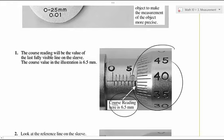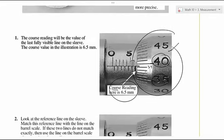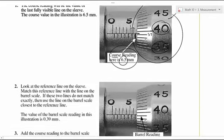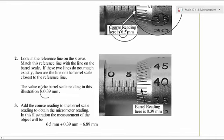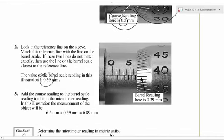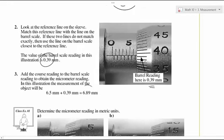But that's not it. We also have this barrel that we're rolling. And we use this part here to help us measure as well. And so we can see that we've got a 35 here and a 40 here. So that's 40, that's 35. And we've got this line here that is going just under 40. So it's at the 39 here. So then we're going to add the 6.5 with the 0.39, this barrel reading. And that would give us 6.89 millimeters.